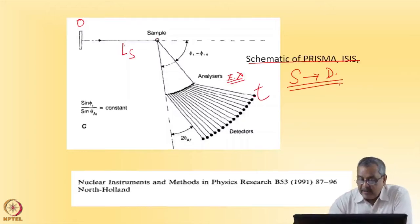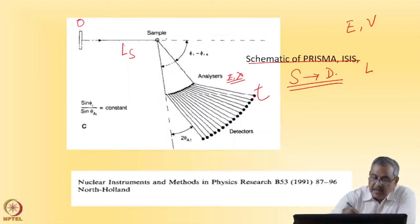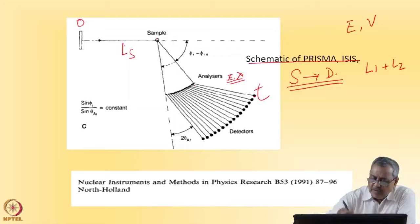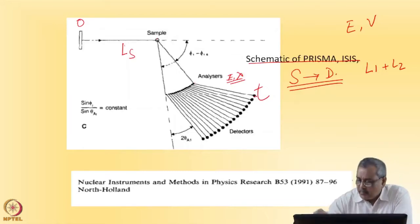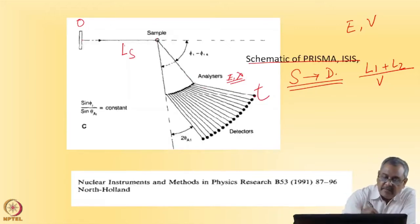I can calculate it because I know the wavelength, energy, or velocity. I can say L equals Ls, which is L1 plus L2 — sample to analyzer, plus analyzer to detector. I can calculate L1 plus L2 divided by V, which is the time taken for this part. Once I know the time taken for this part, I can find out the time taken from the source to the sample.